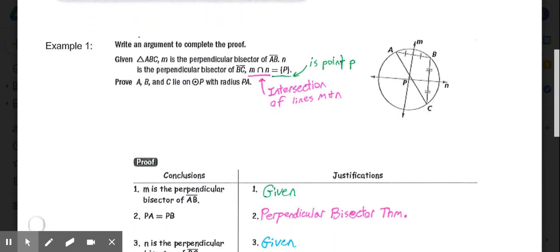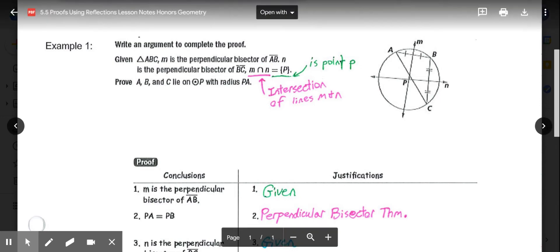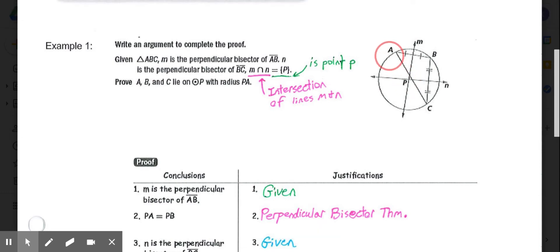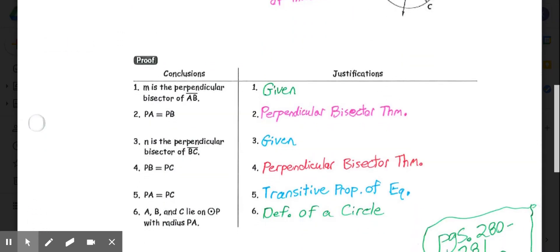Example 1 asks us to write an argument to complete the proof. Given triangle ABC, M is the perpendicular bisector of AB, line N is the perpendicular bisector of segment BC, and the intersection of lines M and N is at point P. So point P is where those two lines cross. We're trying to prove that A, B, and C all lie on circle P that has a radius from P to A.